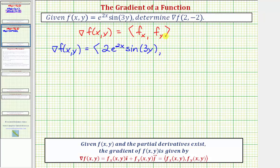Now we need to find the partial of f with respect to y. We differentiate e^(2x) sine 3y with respect to y, treating x as a constant. The derivative of sine 3y with respect to y is cosine 3y times 3, so the partial with respect to y is 3e^(2x) cosine 3y.